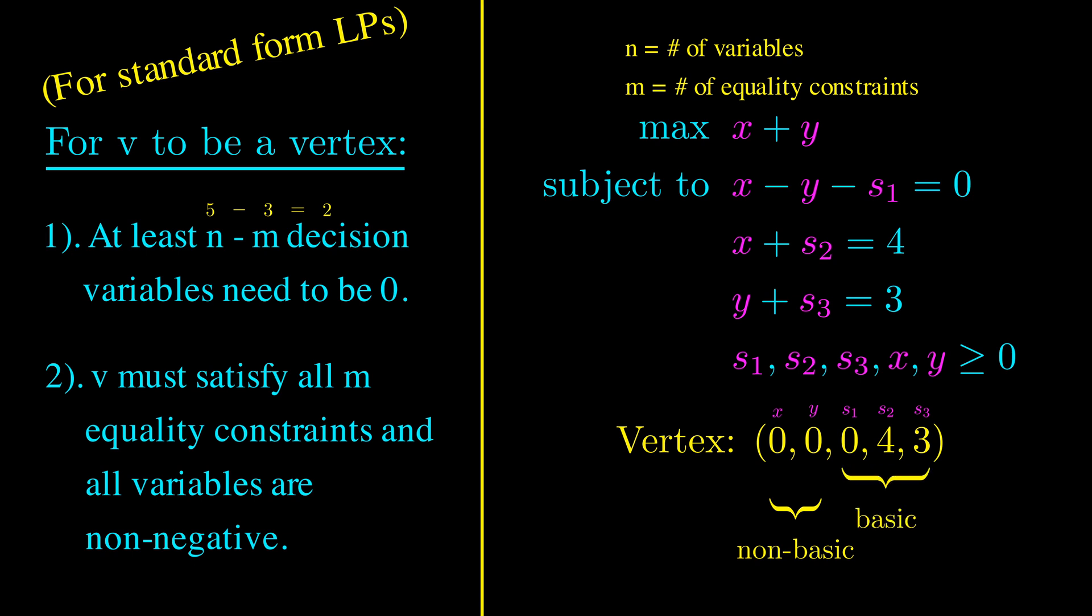So, the first condition can be reworded as, we can choose n minus m variables to be non-basic. We can check that the two conditions are satisfied. We actually got lucky here. After we solved for s1, s2, and s3, all variables turned out to be non-negative, so the solution is feasible.